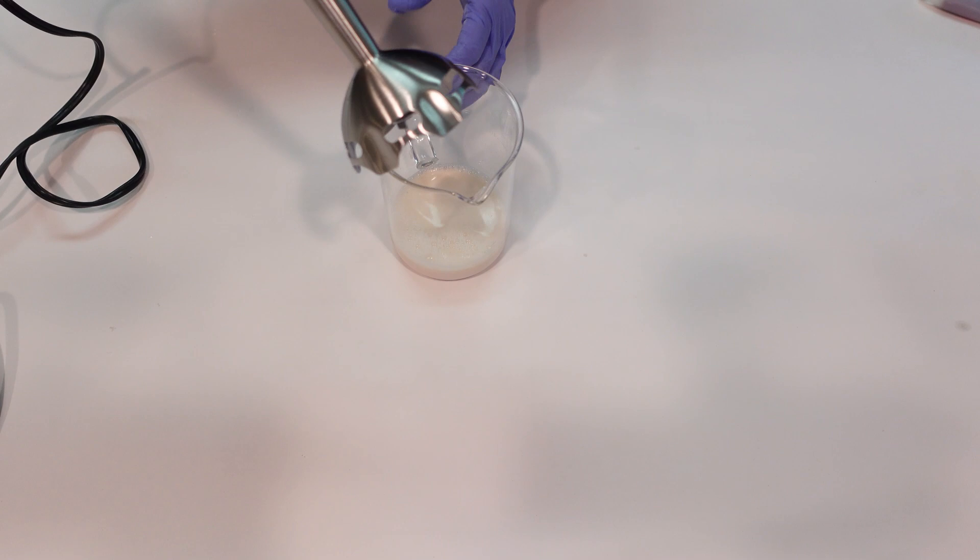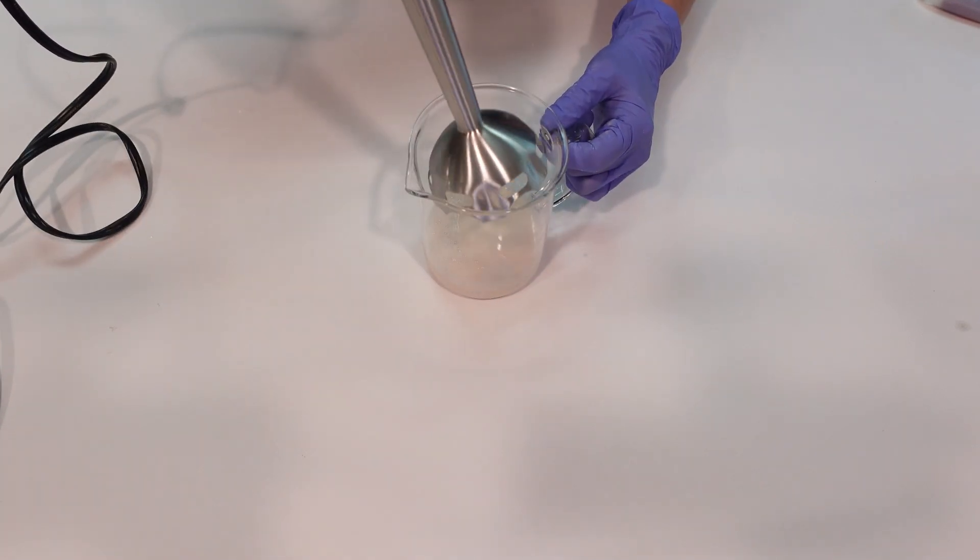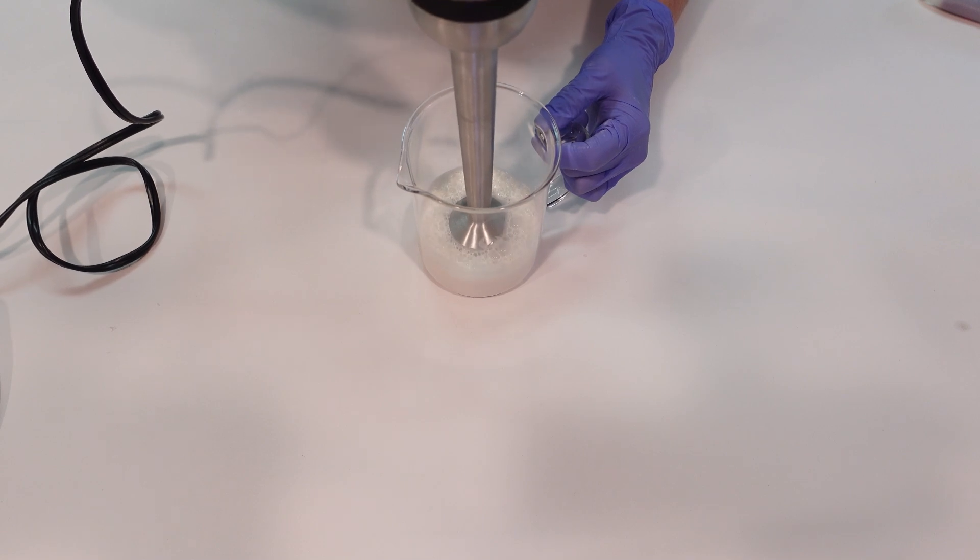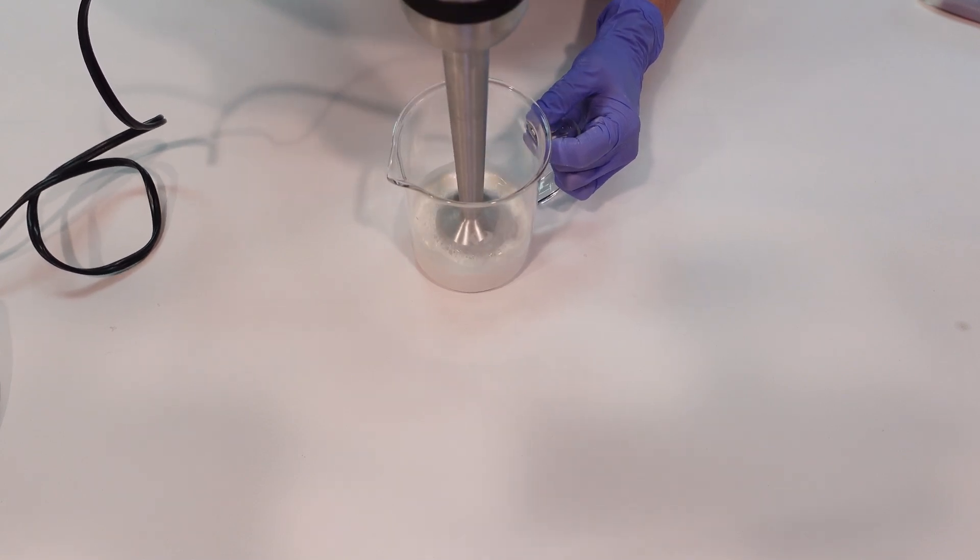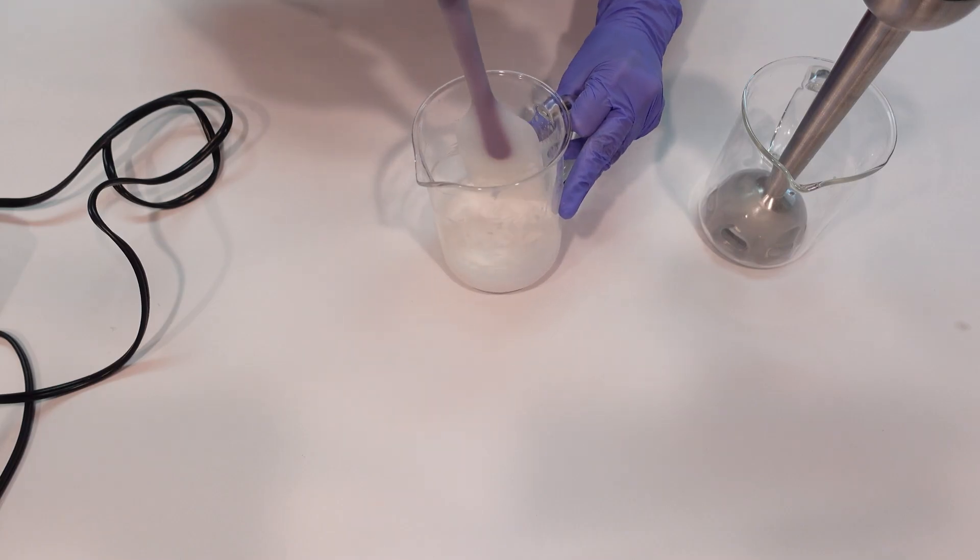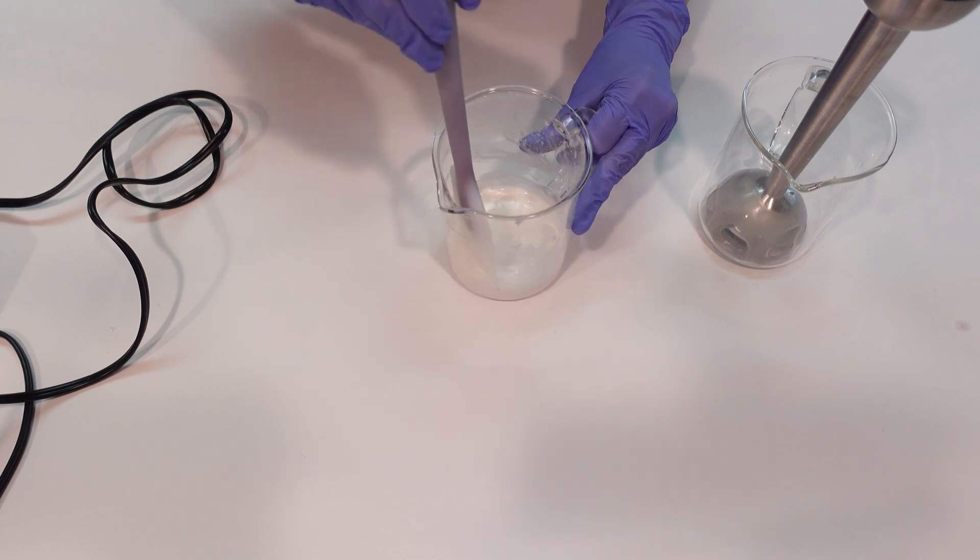So I'm going to go ahead and pour my water phase into my oil phase, and I can see it already starting to emulsify and turn white like lotion. So we're just going to go ahead and blend. We're just using an immersion blender. We're going to go ahead and blend this for about two minutes. I'll bring you back when we're done blending.